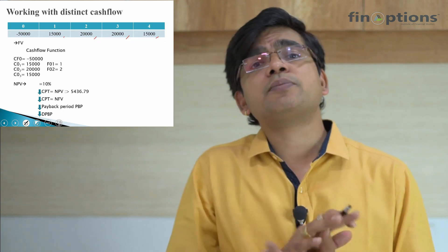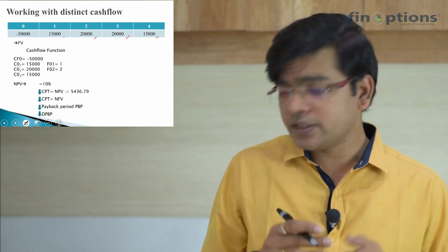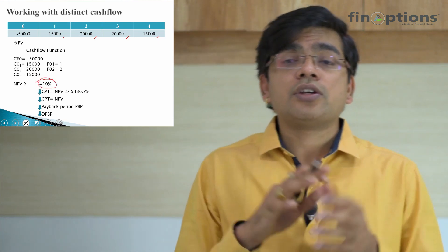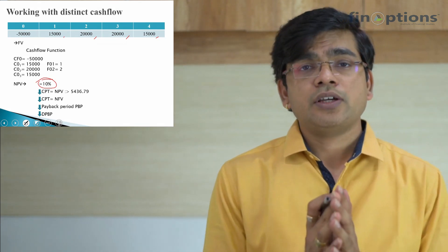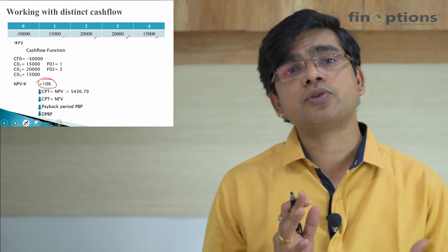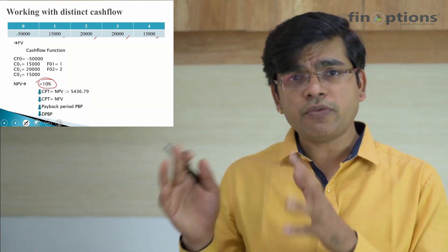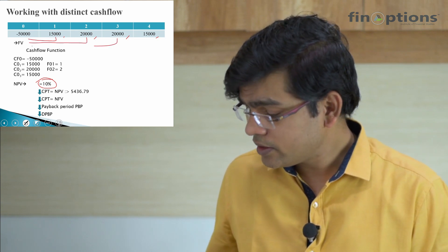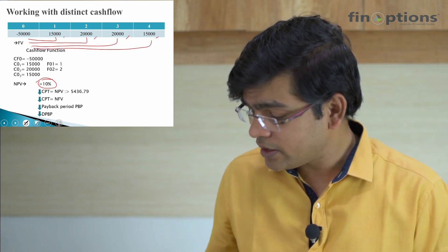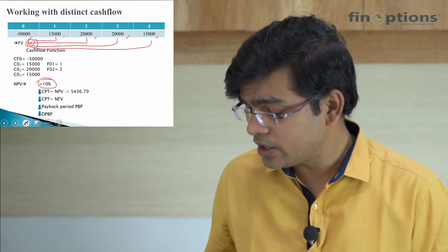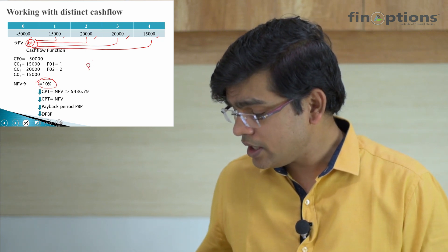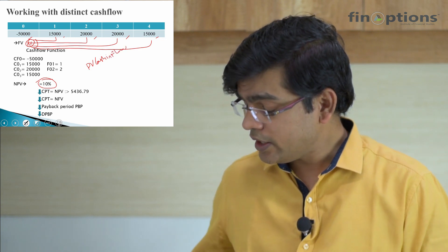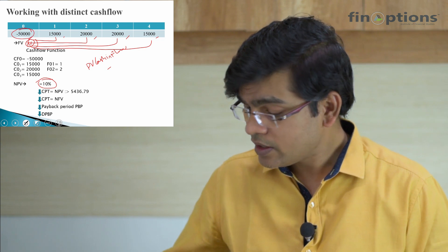To determine whether the project is viable or not, assume the required return for the investor is around 10%. Discounting these future cash flows to present value terms lets us compare the $50,000 outflow today with inflows in the future. We bring the $15,000, $20,000, $20,000, and $15,000 back to base year zero, and all these present values can be added to determine the net PV of cash inflows from the project. Then you subtract the PV of cash outflow, which is $50,000.